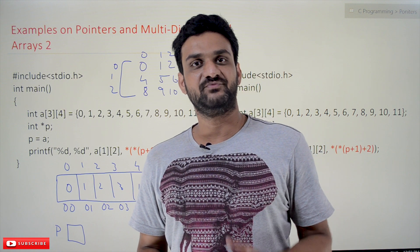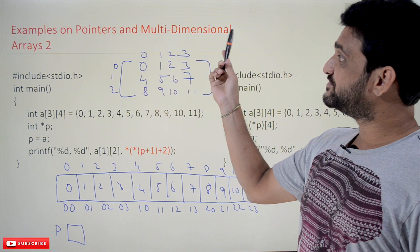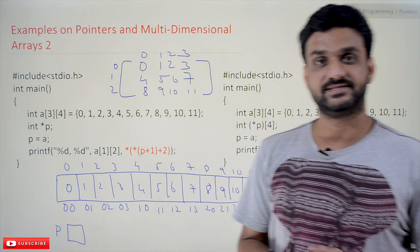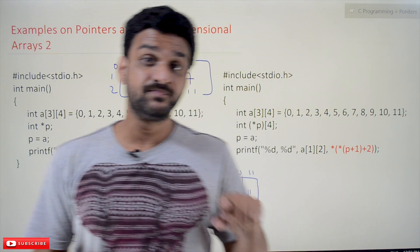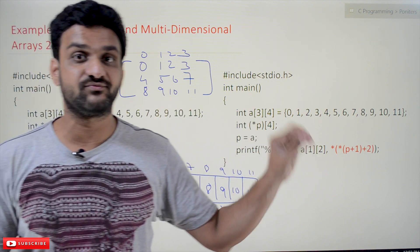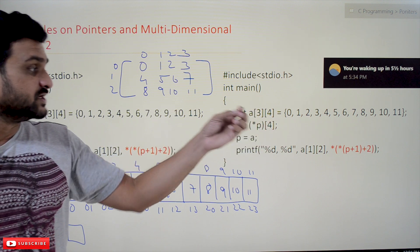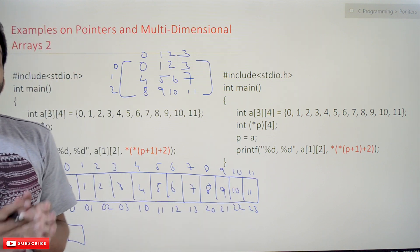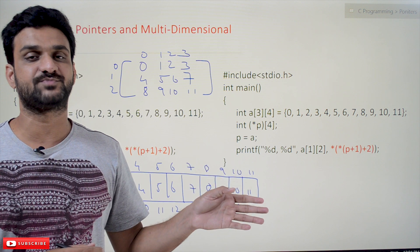Hi, welcome to Learning Monkey. I am Vikram. In this class we'll try to understand examples on pointers and multi-dimensional arrays. This is our second example on pointers and multi-dimensional arrays. If you haven't watched our previous video, we have discussed our first example there. The concepts discussed in the previous example are very much required for this class, as it is closely related. Please watch that video and come back. Every video on our channel is part of a course or playlist, and our suggestion is to follow the entire course for better understanding. The link for the playlist is provided in the description below.